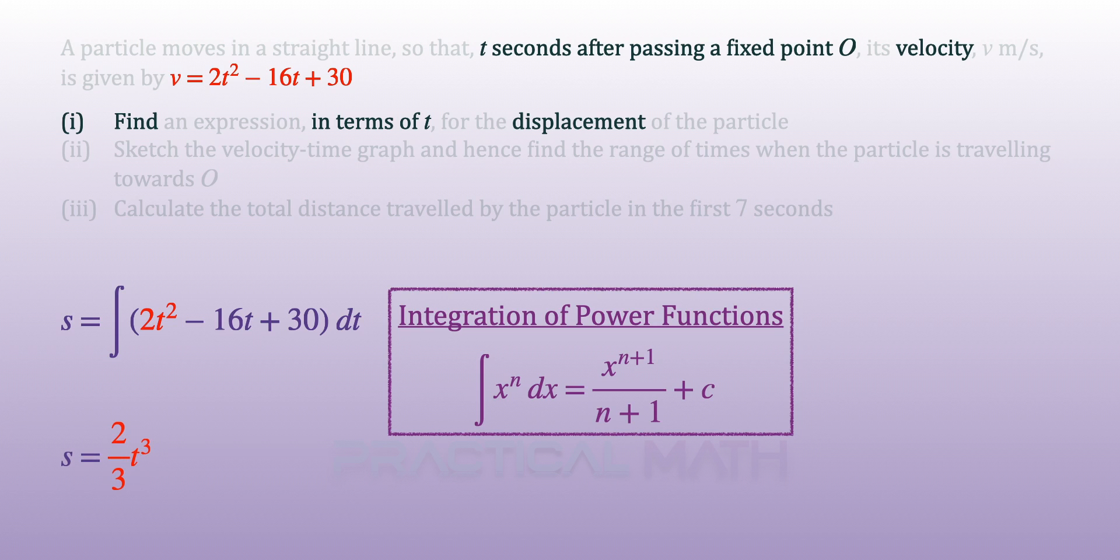Integrating 2t² will give 2/3 t³. And integrating -16t will give us -8t², which is also power plus 1 divided by power plus 1. Integrating the constant of 30 should give us 30t. And we add c where c is the arbitrary constant for indefinite integrals.